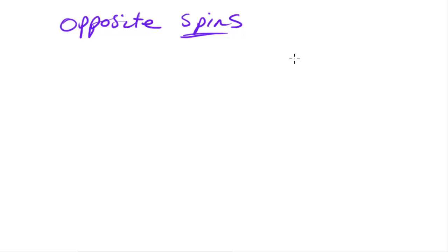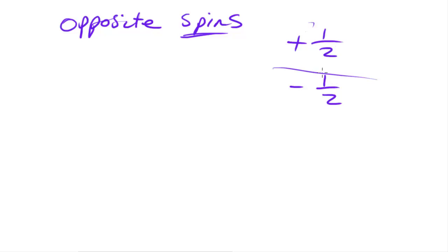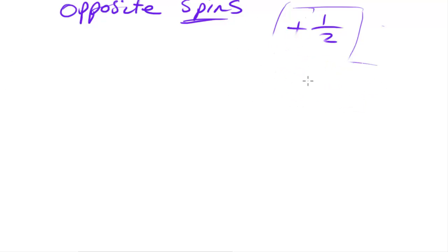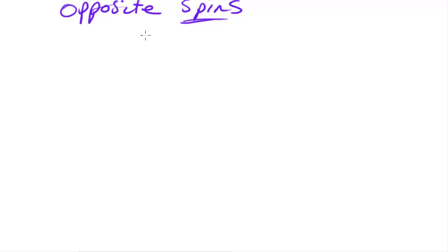Spin is a property which electrons have, and it is quantified by a number — sometimes plus one half and sometimes minus one half. These two values are equal but opposite, one negative and one positive. So each orbital contains one electron with spin +½ and one with spin −½. We don't need to focus too much on the values right now — we just need to know that electrons which pair up in orbitals have opposite spin.